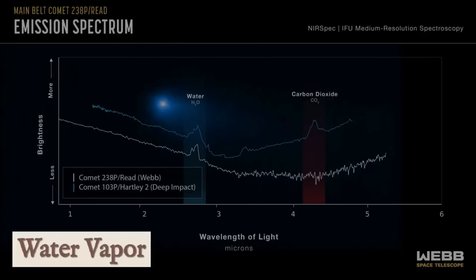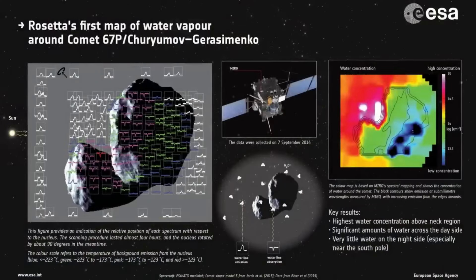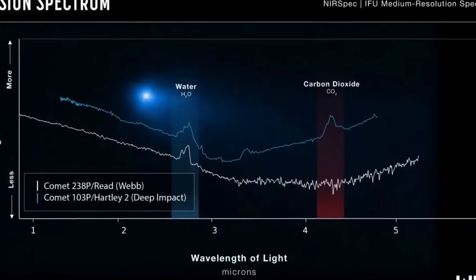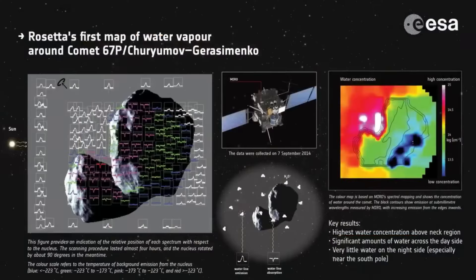Normally, when a comet speeds up or changes direction slightly, it's because jets of gas are shooting out from its surface, acting like tiny rocket engines. But Oumuamua wasn't showing any signs of releasing gas. It was completely silent, yet somehow it was accelerating.